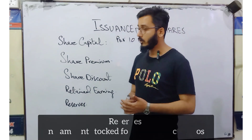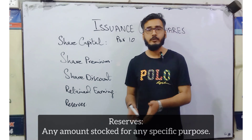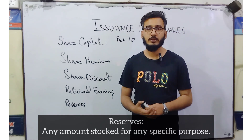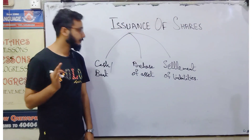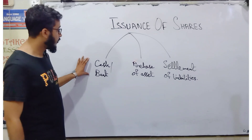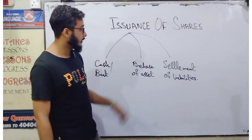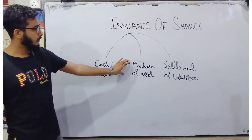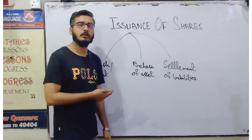Reserves means the amount which is saved or set aside for a specific purpose. In the entries you will see that we have created many reserves and it will get more clear. Now, before starting on entries, you have to know that issuance of shares is made in three ways: number one, cash or bank — that is the normal situation; then against purchase of any asset; and against settlement of any liabilities. The company can issue shares against these three things.